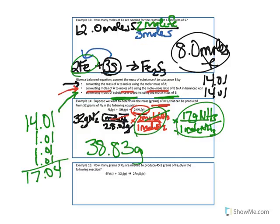Looking at our significant figures: we had 2 here, 4 here, this is an exact number, and 2 here. So if we round, we would get 39 grams of NH3.